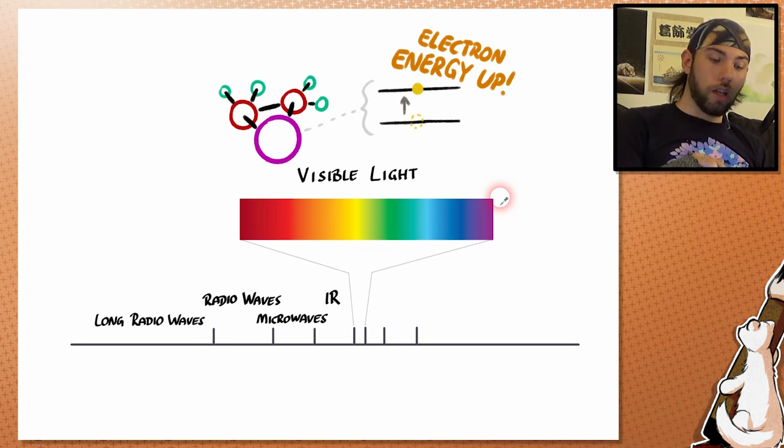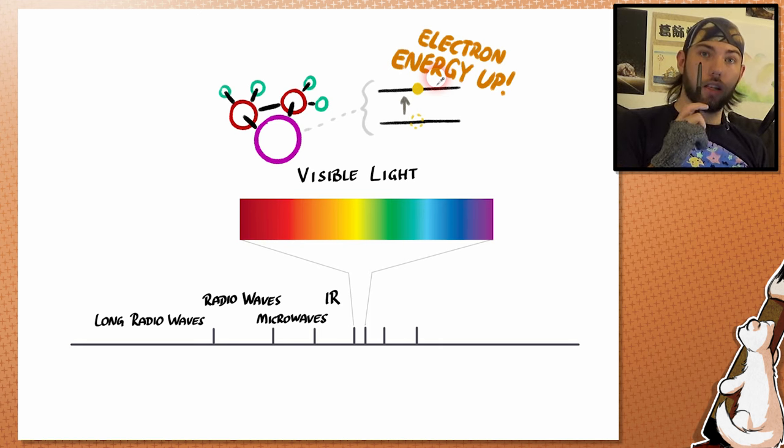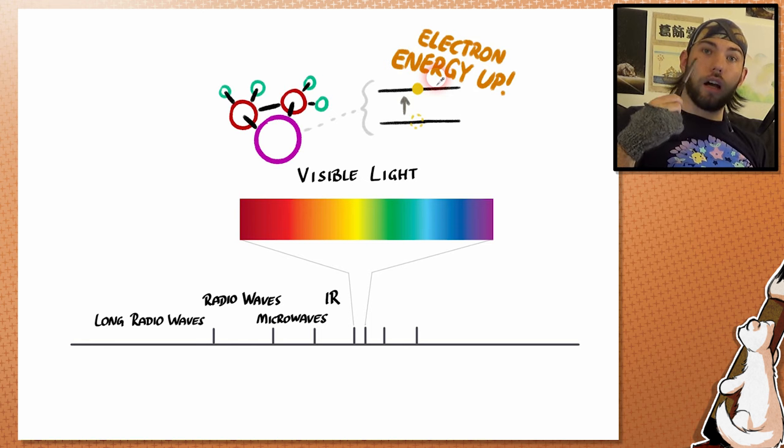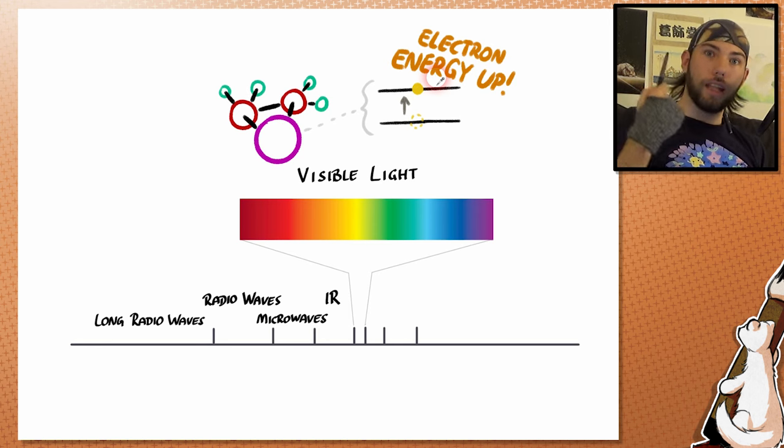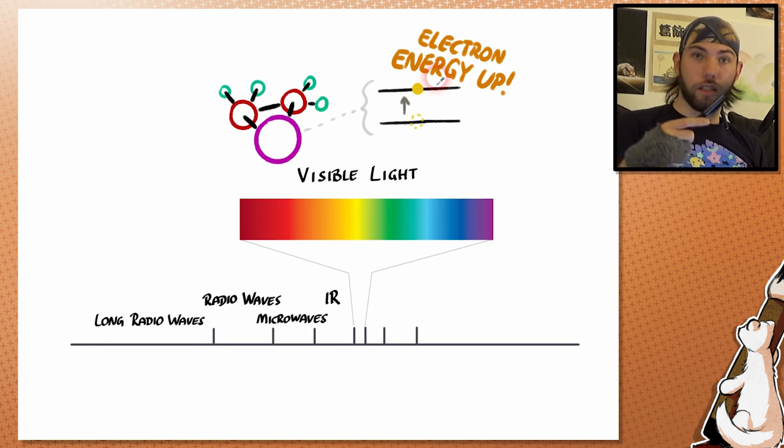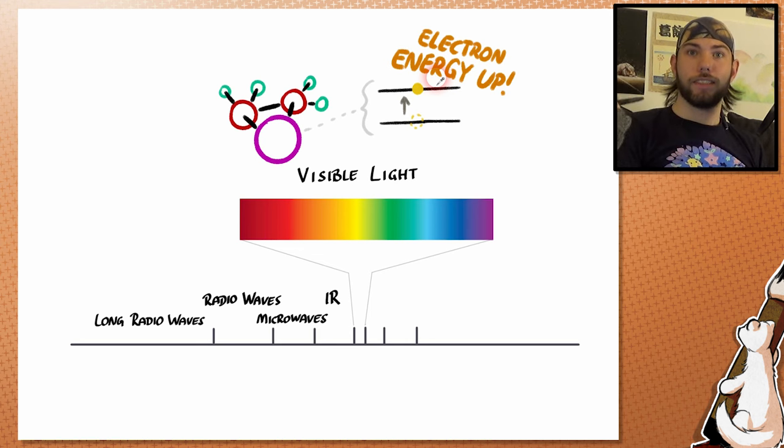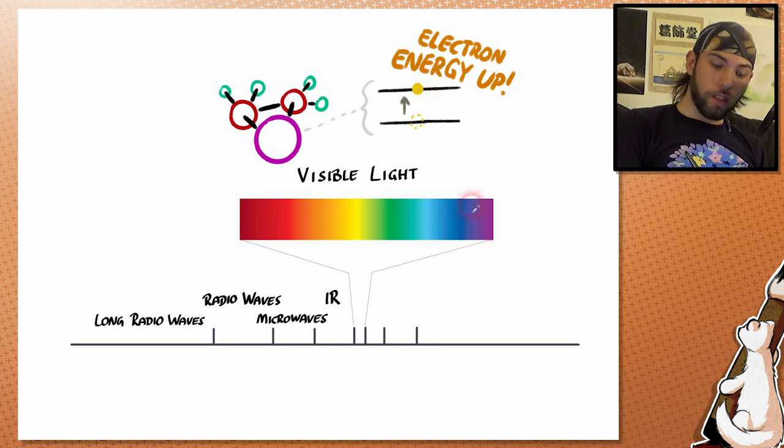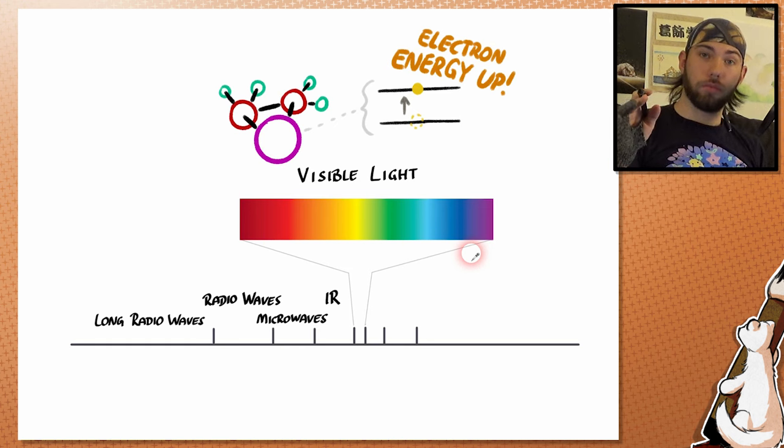But it can also excite electrons to a higher energy level. And what that means is, for example, when light hits our eyes and is projected on the backside of our eyes, the retina, then it excites the electrons within the molecules of the cells. This causes a signal that can be sent to our brain. And there we go, we can see light. And this is also the reason why pretty much all of the animals that can see colors, can see colors within this spectrum here. Maybe also a little bit in the ultraviolet spectrum, but that's it.